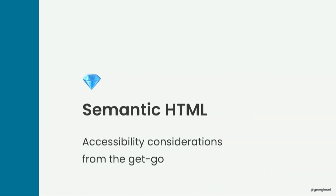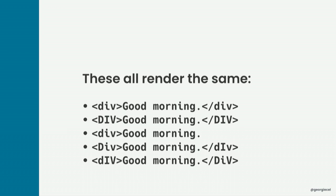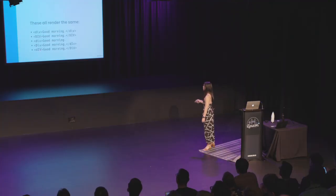Accessibility actually starts from having universally acknowledged semantic markup. HTML makes up the skeleton of a website — it can be very forgiving. It's not case sensitive, so if you write a div in uppercase it would still come out as a div; the browser would keep trying to parse it without throwing any error. This actually led to HTML being dismissed as easy, and code quality considerations often left behind. But HTML makes up such an integral part of websites, so meaningful structure is important.